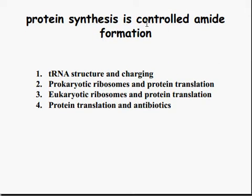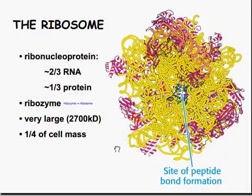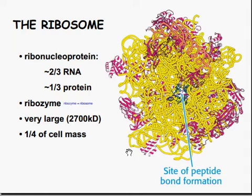Protein synthesis topics include controlled amide formation, tRNA structure and charging, prokaryotic ribosomes and protein translation, and we'll get into eukaryotic ribosomes later. The ribosome is a ribonucleoprotein — two-thirds RNA and one-third protein, also called a ribozyme. They are very large: 2,700 kilodaltons, about a quarter of the cell's total mass.